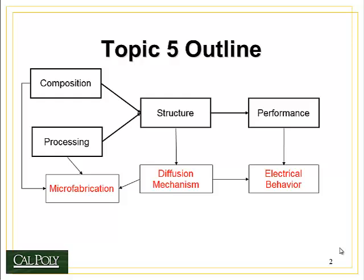Microfabrication is the process of making very small devices on silicon wafer chips. This is how we make computer chips, solar cells, and a number of other products. In order to do microfabrication, we have to take advantage of the diffusion mechanism — the way in which atoms move around within a solid metal or any material. We'll also look at electrical behavior and how it's influenced by the diffusion process.